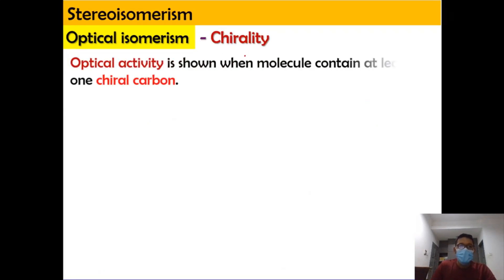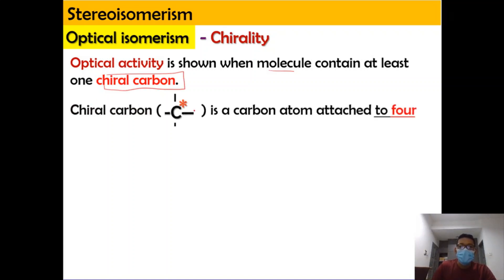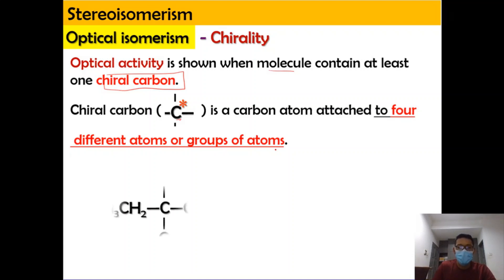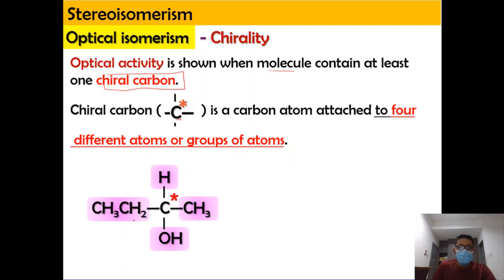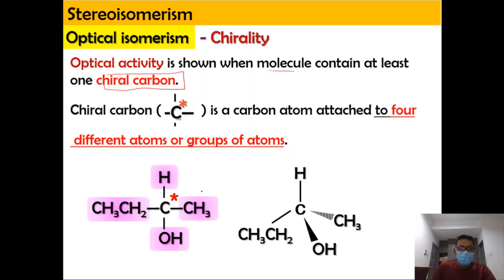Chirality only occurs when the molecule contains at least one chiral carbon. The chiral carbon is a carbon atom attached to four different atoms or group of atoms. For example, the carbon here is attached with hydrogen, a methyl group CH3, OH, and ethyl CH2CH3. So we can say that this carbon is a chiral carbon because it is attached with four different groups. This is the drawing in 2D form, and later you will learn how to draw it in 3D.